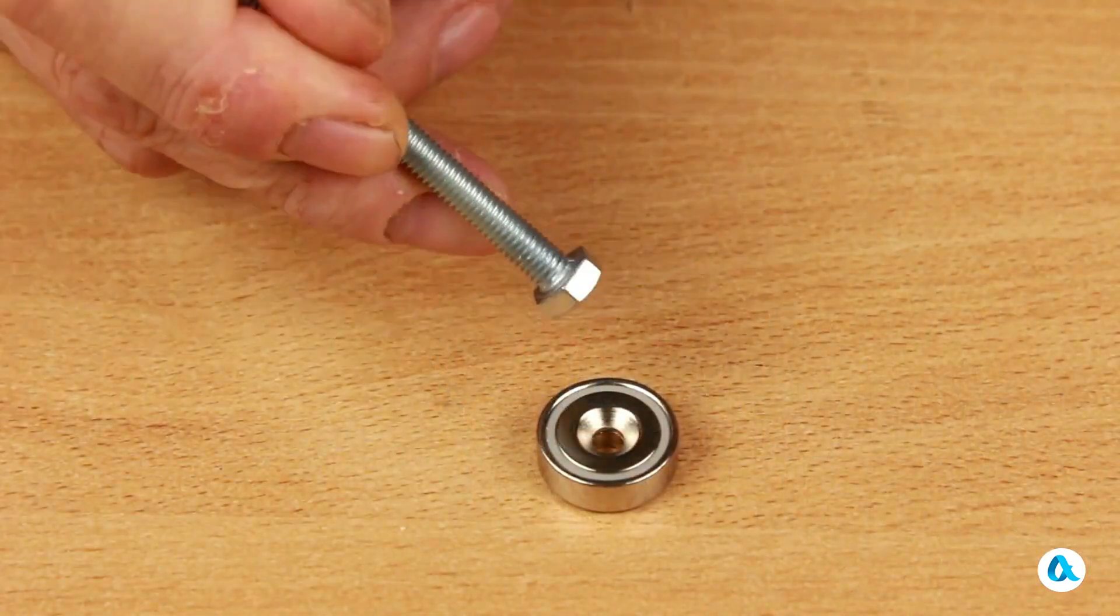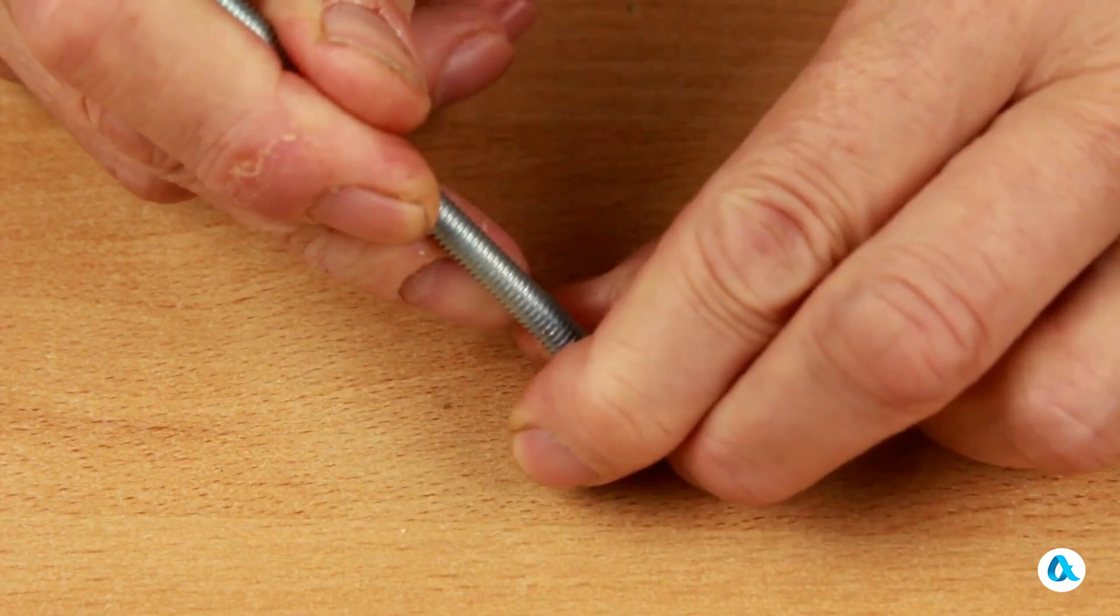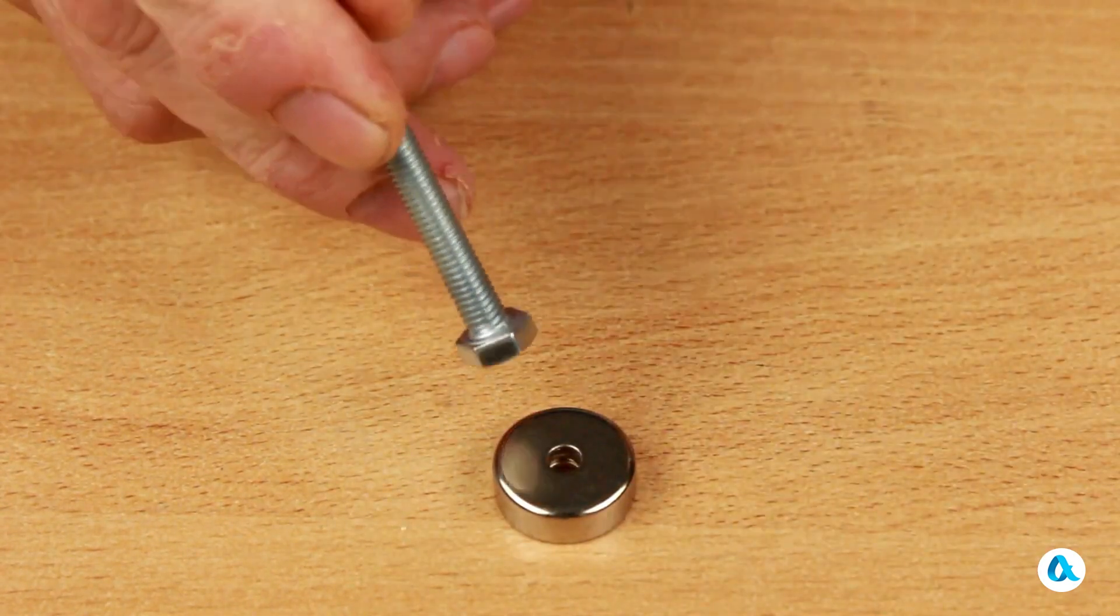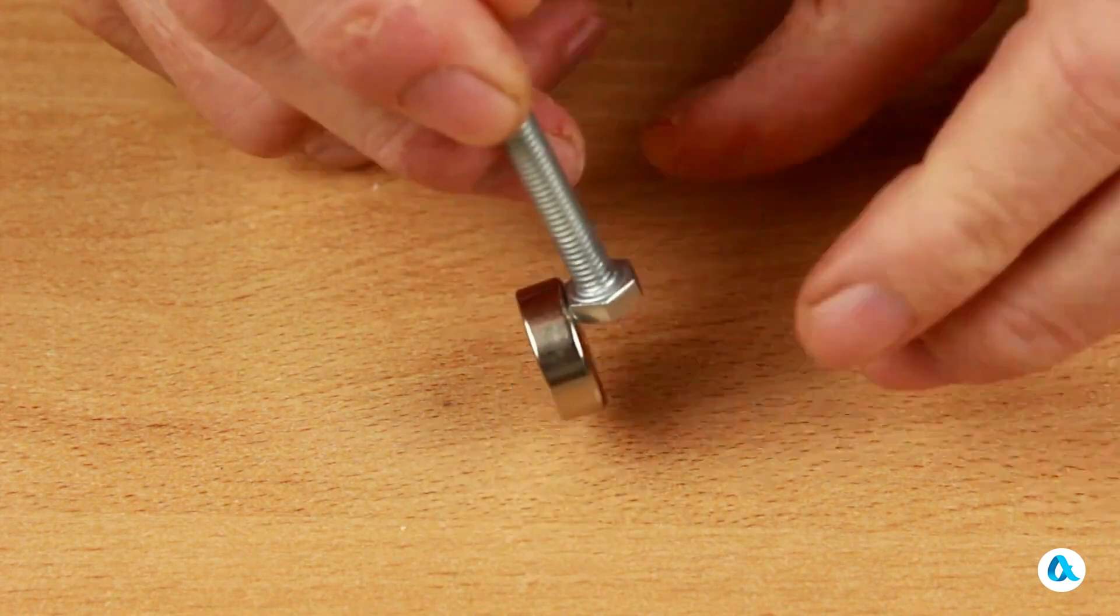When I bring the steel bolt close to this side of the magnet, it jumps and is magnetized very strongly. I turn the magnet over and now it is magnetized very weakly.